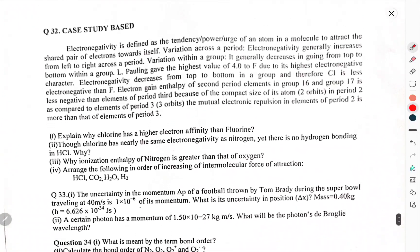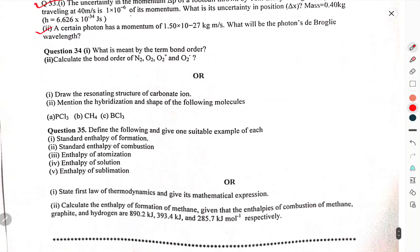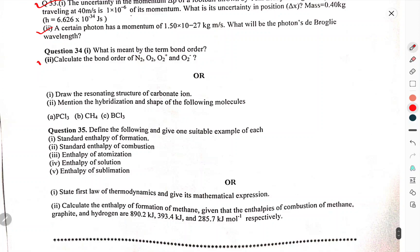Now we have come to the next one, that is Question 33. The uncertainty in momentum ΔP of a football thrown by Tom Brady during the Super Bowl is given. What is the uncertainty in position ΔX? A certain photon has momentum 1.5×10^-27 kg·m per second. What is the photon's de Broglie wavelength? What is meant by the term bond order? Calculate the bond order of N2, O2, O2+, O2-. Draw the resonating structure of carbonate ion. Mention the hybridization and shape of the following molecules.